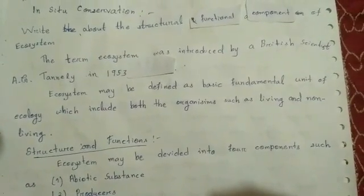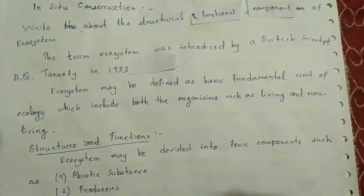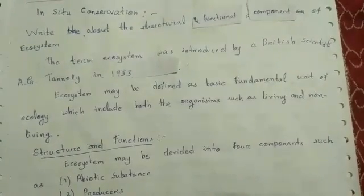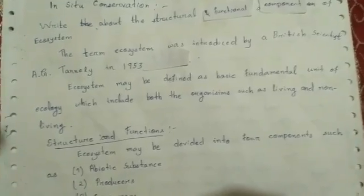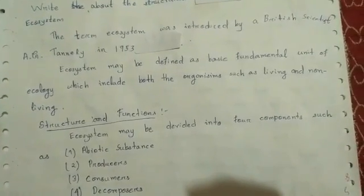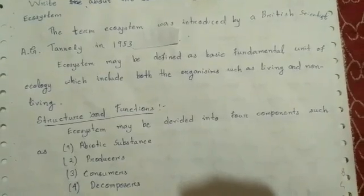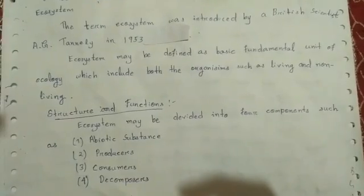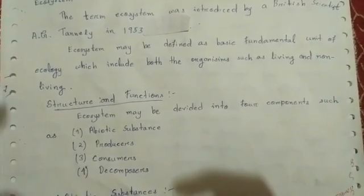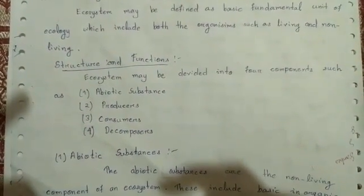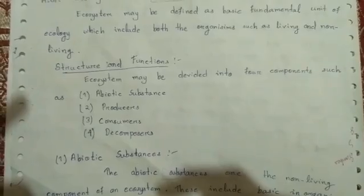The topic is the Structural and Functional Components of an Ecosystem. The term ecosystem was introduced by British scientist A.G. Tansley in 1935. An ecosystem may be defined as the basic fundamental unit of ecology, which includes living and non-living organisms. Ecosystems may be divided into four components: abiotic substances, producers, consumers, and decomposers.